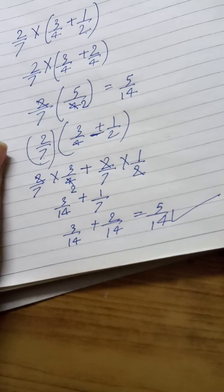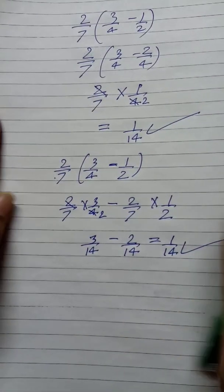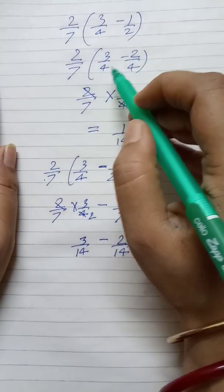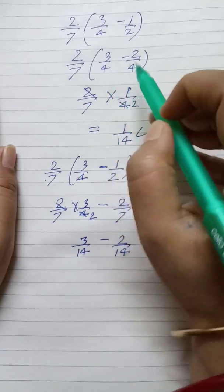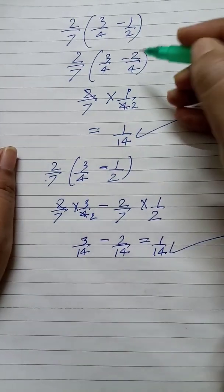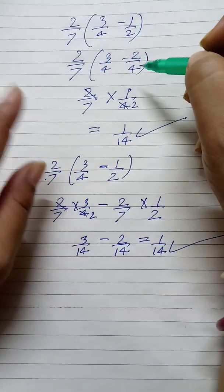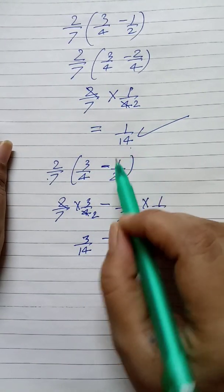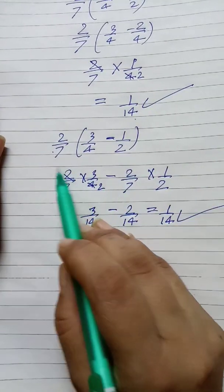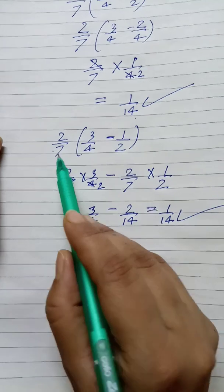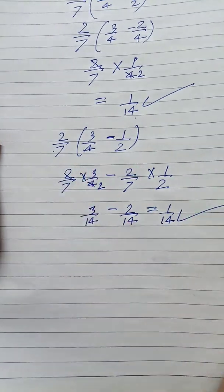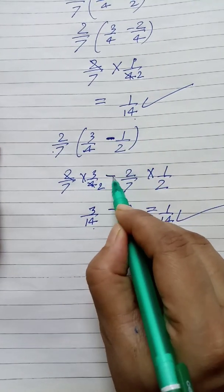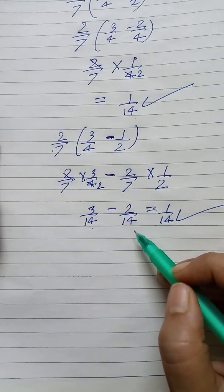Let us understand it in case of subtraction. Here we have performed the subtraction. In the first case, we did the calculation inside the bracket — 3 by 4 minus 2 by 4. I converted it to equal denominators and the result is 1 by 14. In the later case, I opened the bracket: 2 by 7 was multiplied with 3 by 4, and the result is 3 by 14. And here we have the minus sign, so we will put this sign here and we obtained the result minus 2 by 14.